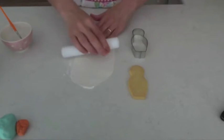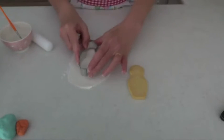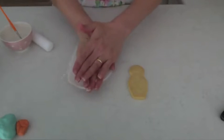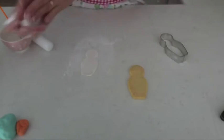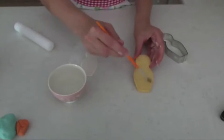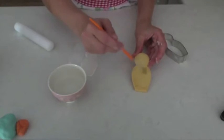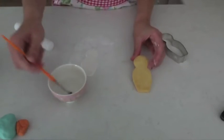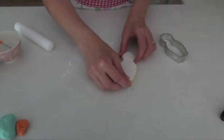I just like to lift it up every now and then so it doesn't stick to the workbench so much. Okay, and just use the cutter to press out the shape. Brush water onto the cookie and this will help the fondant to adhere or stick. And then pop it in place.